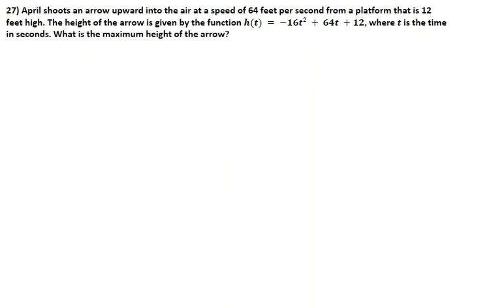Alright guys, we're looking at a word problem, which is number 27. It states that April shoots an arrow upward into the air at a speed of 64 feet per second from a platform that is 12 feet high. The height of the arrow is given by the function h(t) = -16t² + 64t + 12, where t is the time in seconds. What is the maximum height of the arrow?